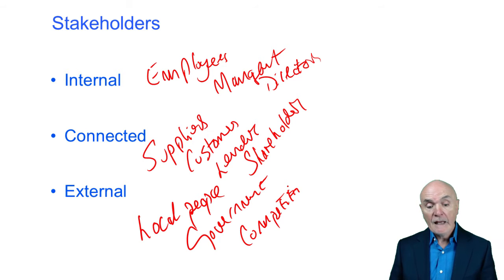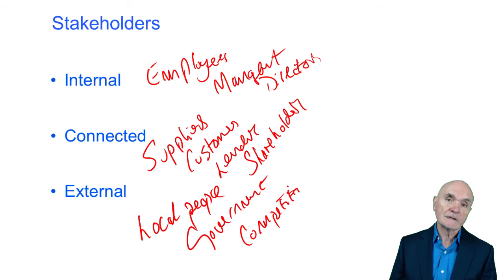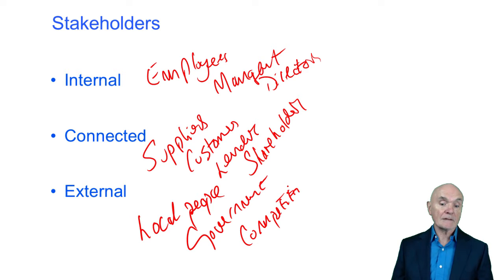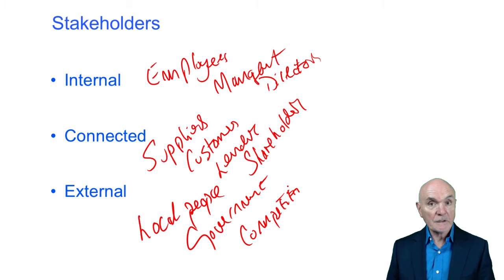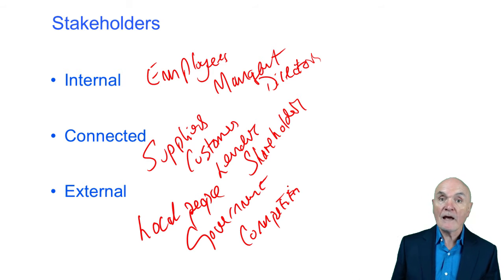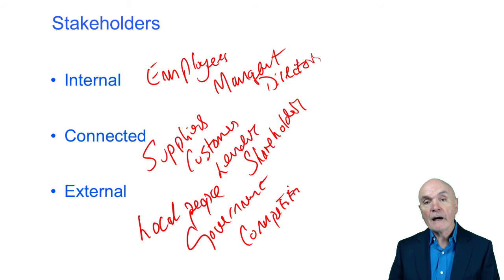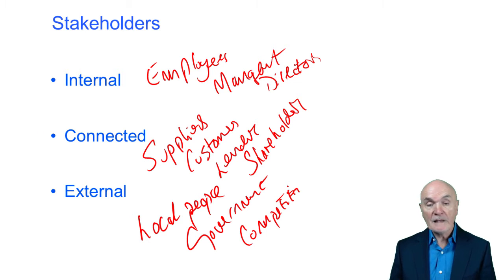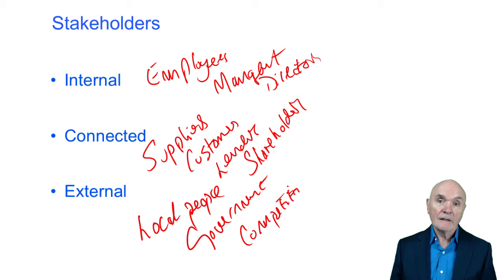Similarly, government is usually put in external. Government hopes that the organisation will employ people, make profits, and pay tax. Competitors don't have a contractual relationship but would be affected by any new products you make, or by any illegal steps taken to gain advantage over them.